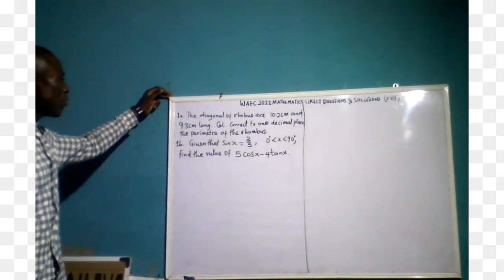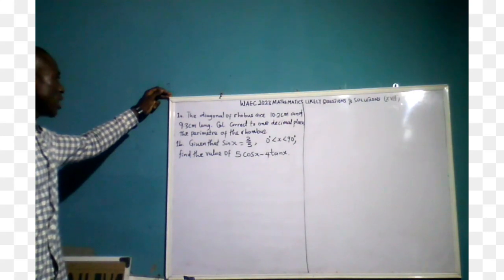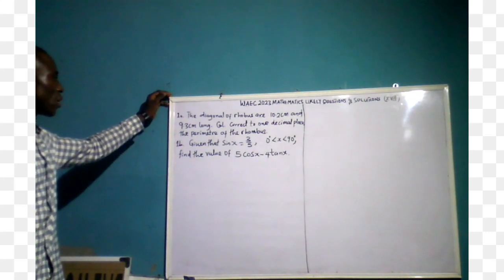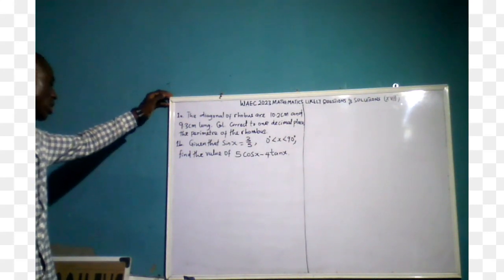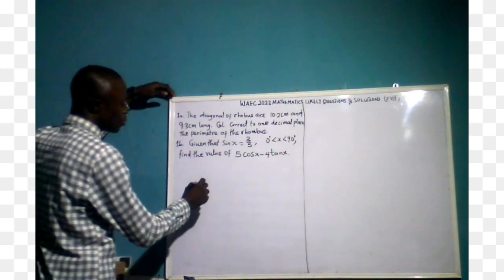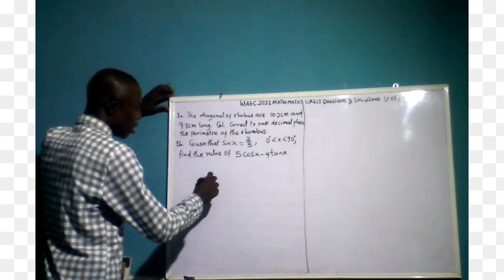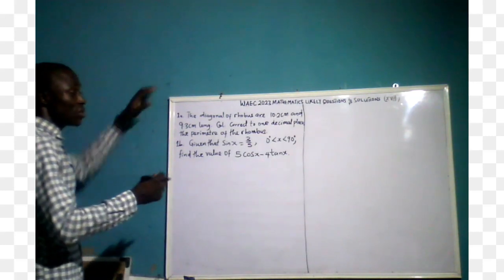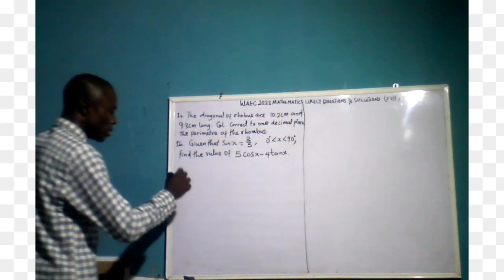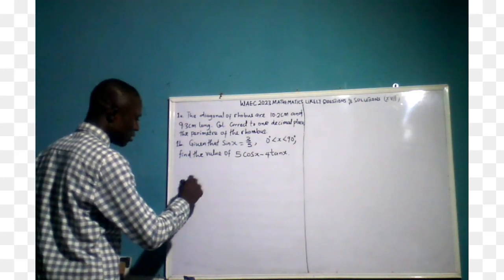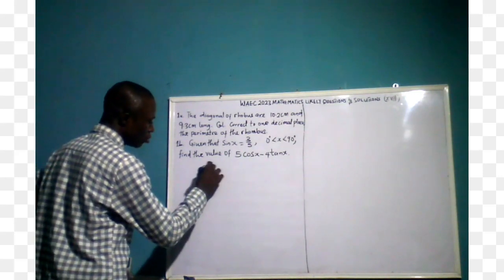Question one: the diagonals of a rhombus are 10.2 centimeters and 9.3 centimeters long, and we are asked to calculate, correct to one decimal place, the perimeter of the rhombus. Note that a rhombus is a special parallelogram in that it has all its sides equal. Let's have the board solution.